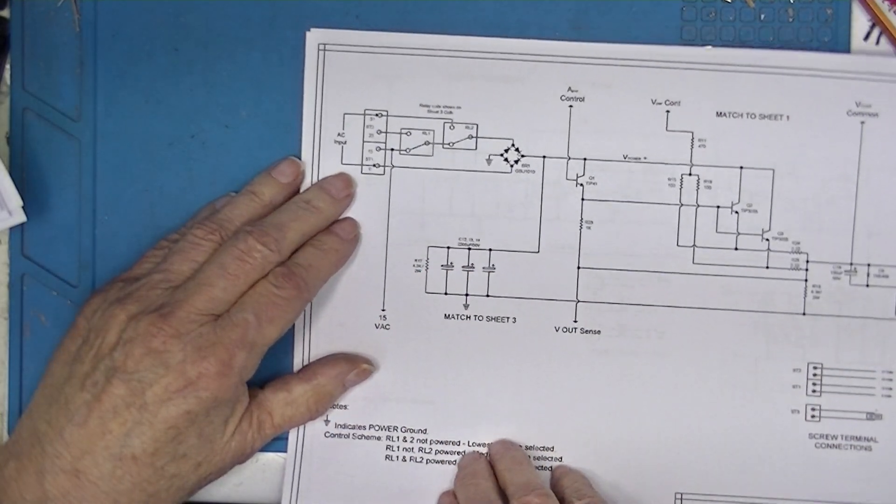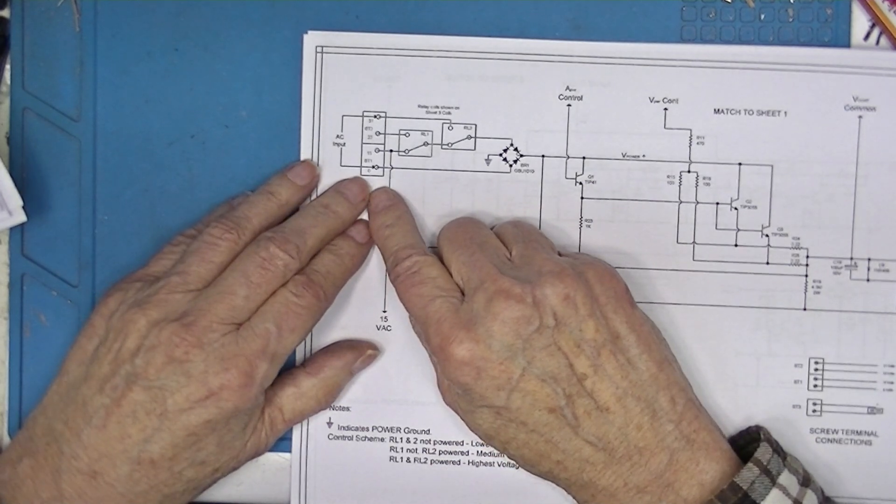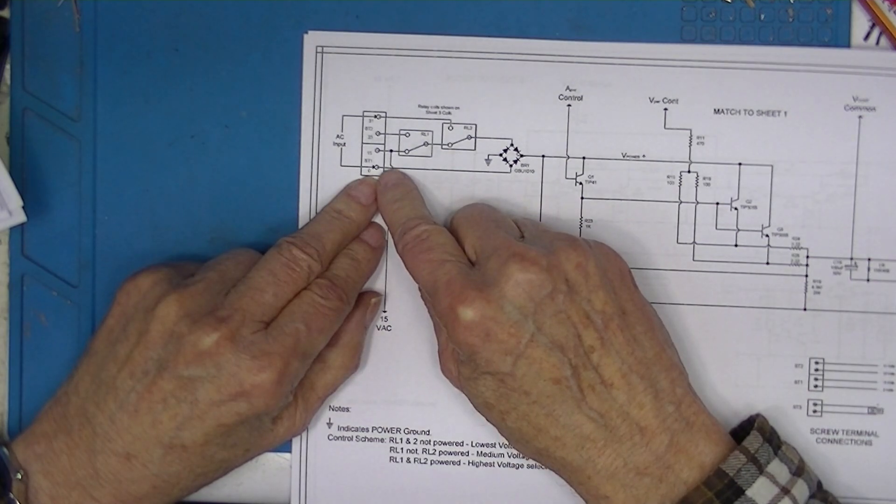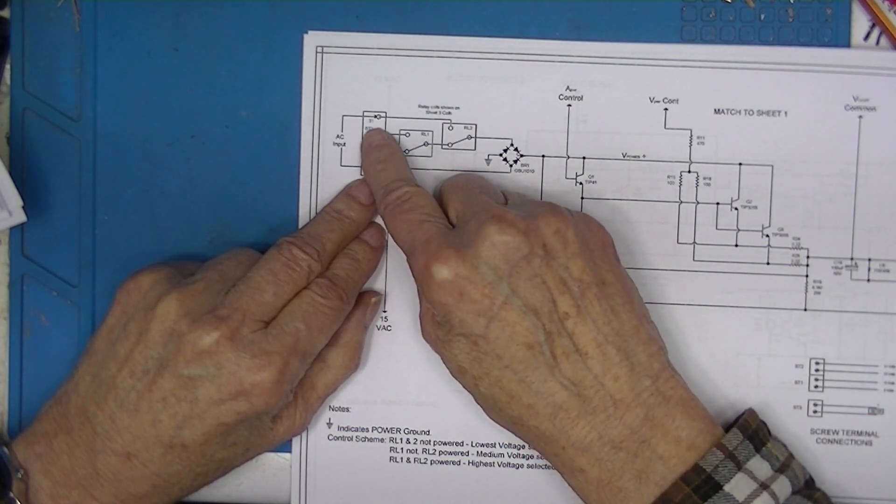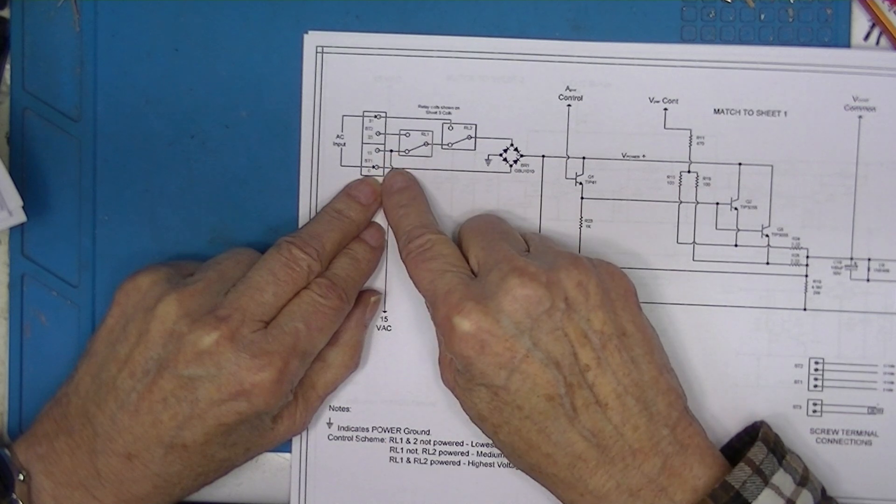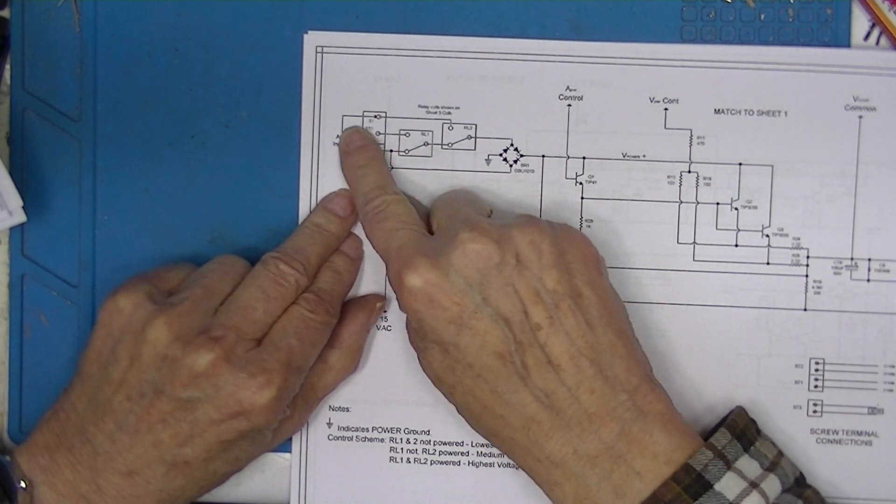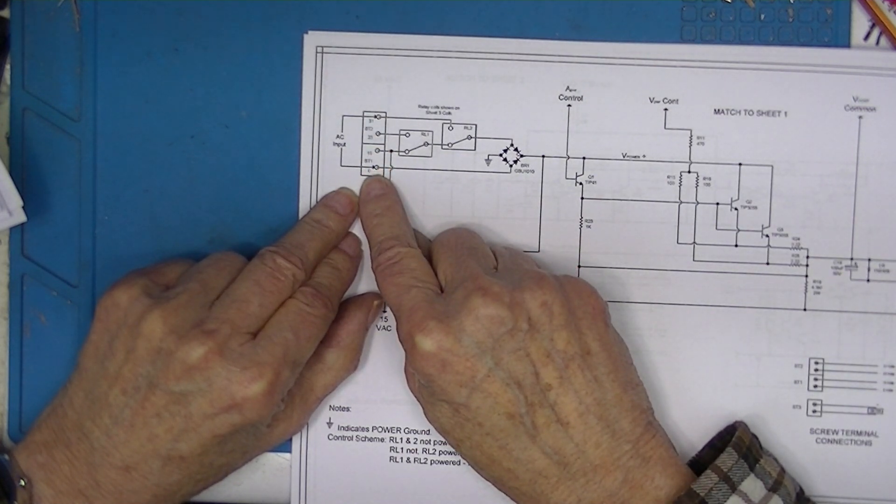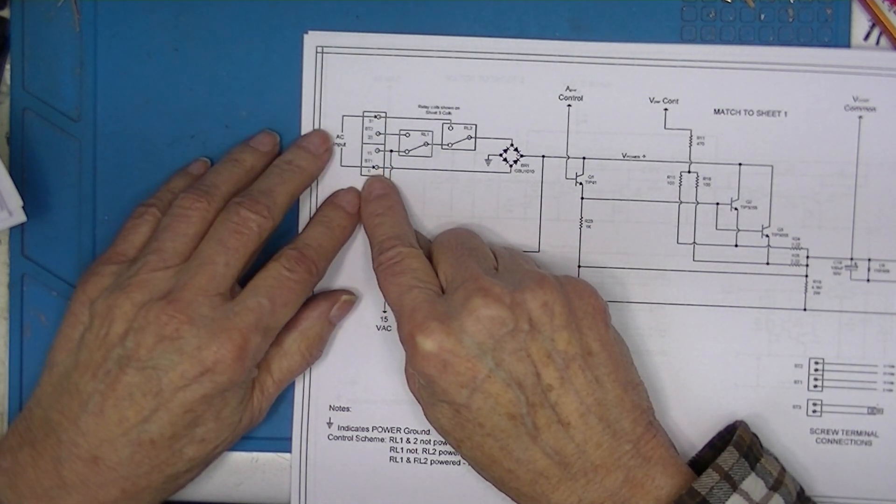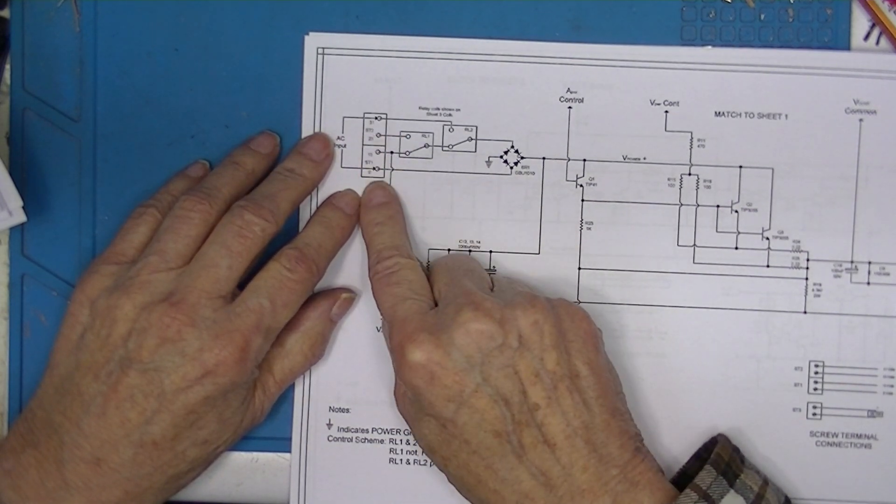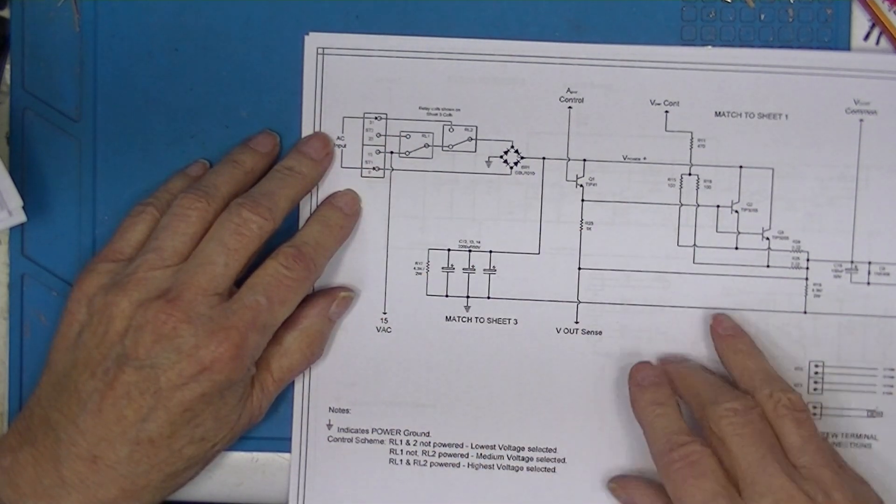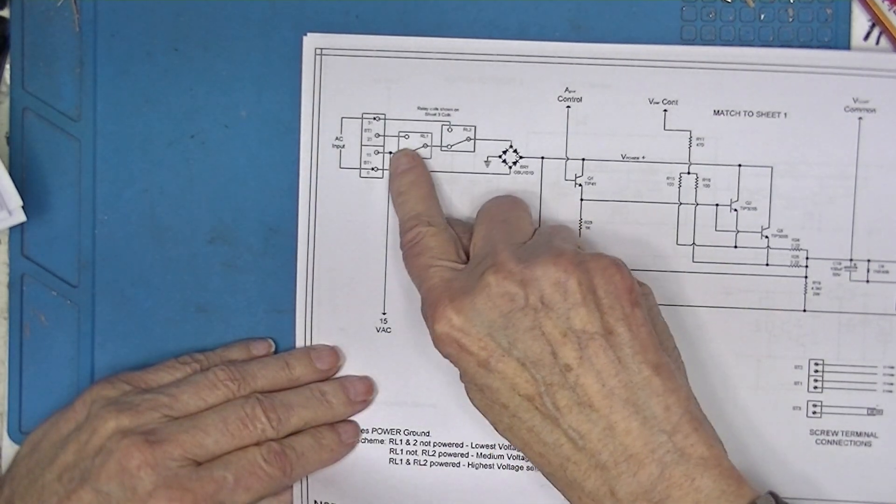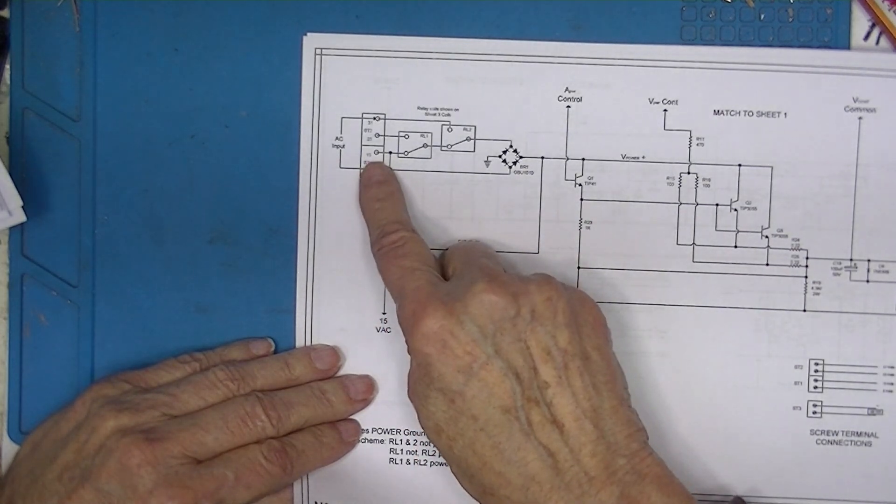This design uses a tapped transformer. One end we can call zero and the taps are at 15, 23 and 31 volts. That's almost unobtainium. We'll get to that and I'll explain what I intend to do there.